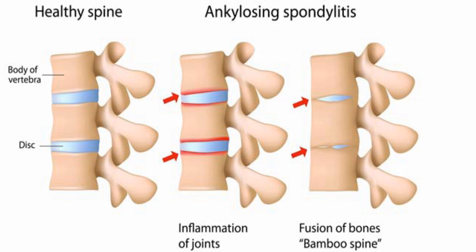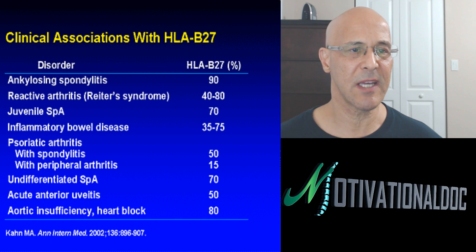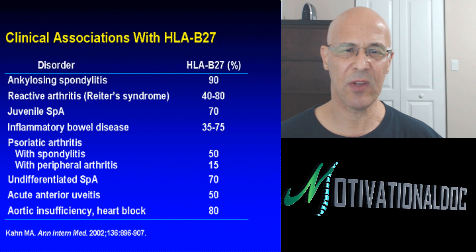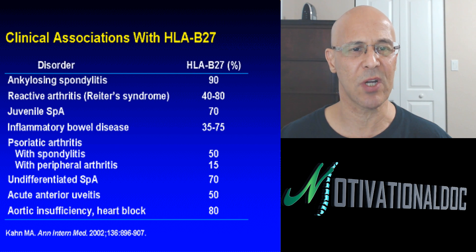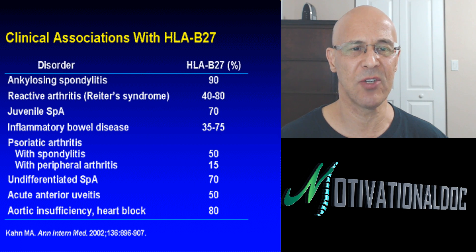We call this a fusion of the bones — a bamboo spine. Looking at a healthy spine versus ankylosing spondylitis, you can see changes occurring above and below the disc. The ligaments start to fuse, and we get fusion on the joints and bones, causing the bones to fuse with one another. HLA-B27 is the clinical association: over 90% of people who have ankylosing spondylitis carry this antigen in their blood.